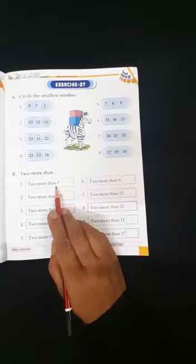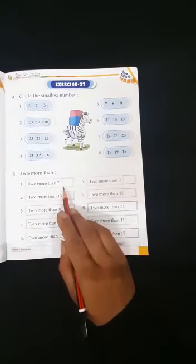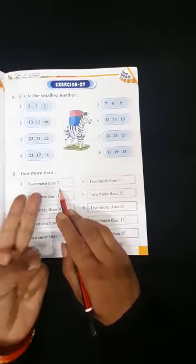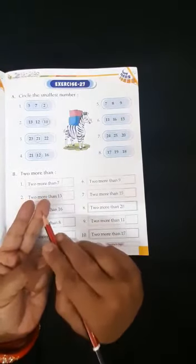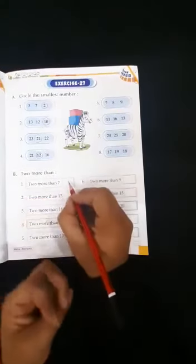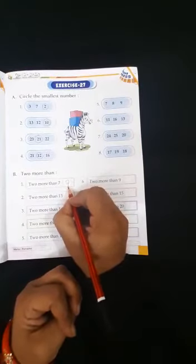Okay, children? Now, after 7, we will add 2 numbers. So, open 2 fingers. After 7, 8, 9. So, answer is 9. We will write here 9.